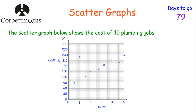Here we've got a scattergraph showing the cost of 10 plumbing jobs. For instance, this point: the job lasts half an hour and costs £90. This job lasts five hours and costs £240. This point is a two-hour job and costs £150. Sometimes in a GCSE question you might be asked to plot some points — for example, the 11th job lasts three hours and costs £180, so you go across to three hours and plot a point at £180. I'd highly recommend looking at the practice questions for plotting points on scattergraphs.